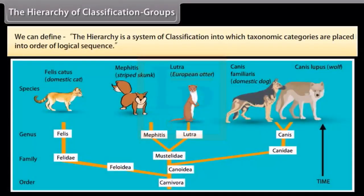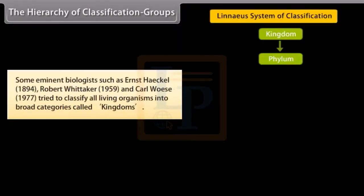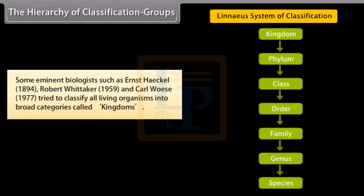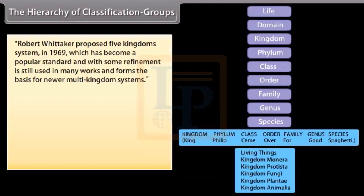The hierarchy is a system of classification in which taxonomy categories are placed in order of logical sequence. Some eminent biologists such as Ernst Haeckel (1894), Robert Whittaker (1959), and Carl Woese (1977) tried to classify all living organisms into broad categories called kingdoms. Robert Whittaker proposed the five kingdoms system in 1969, which became a popular standard and with some refinement is still used in many works.